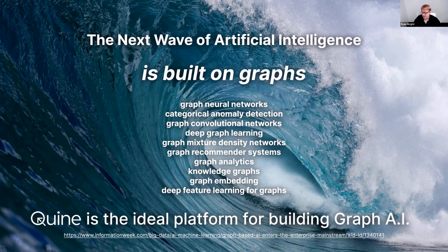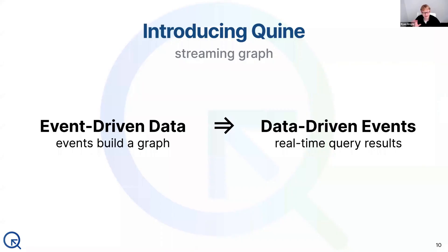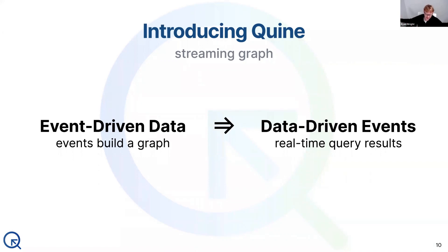We look at this from the perspective of Quine as really having two parts: take high volume streaming data and use that to build a graph internally. Why a graph? Because it's so expressive — it lets us connect data to other data. So take that event-driven data, build it into a graph, and then watch that graph and turn it into data-driven events.